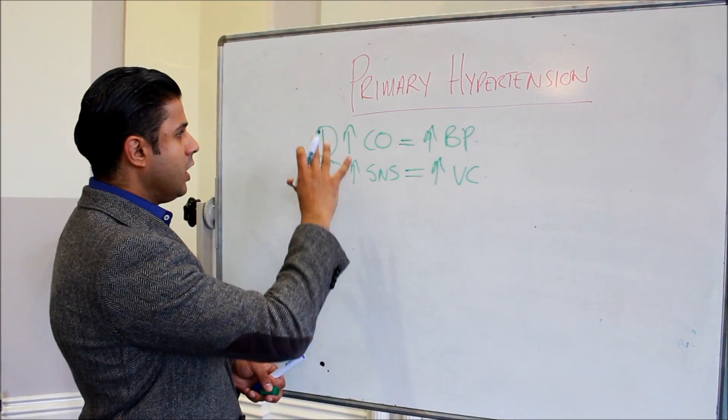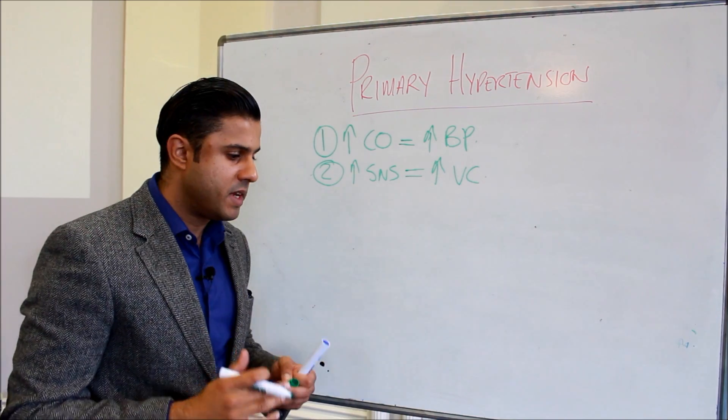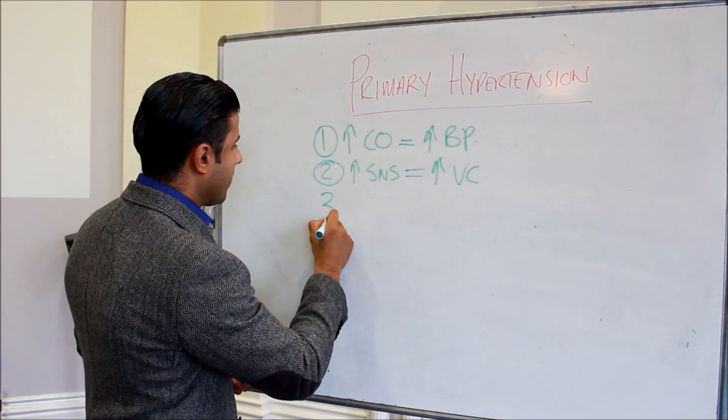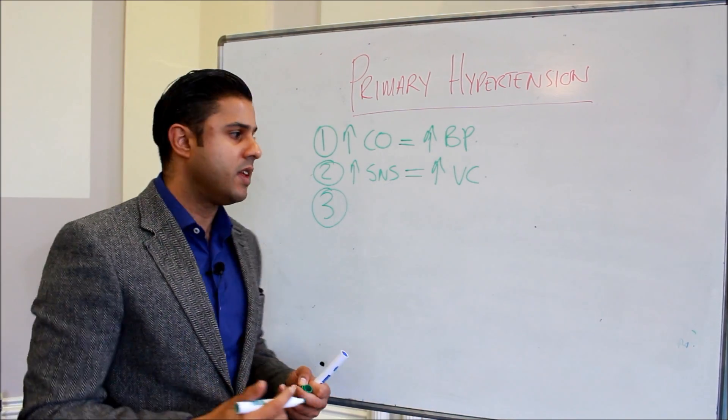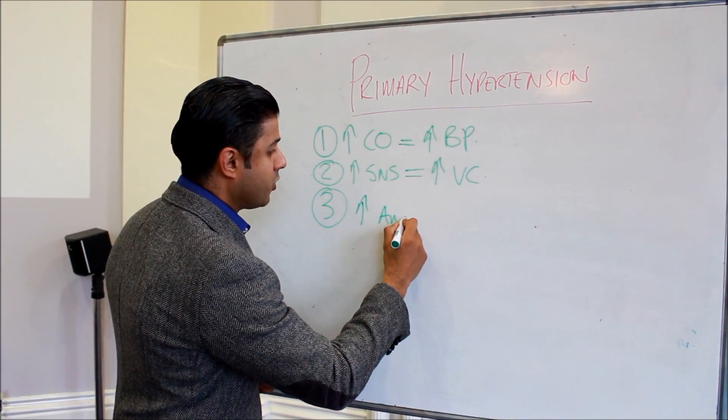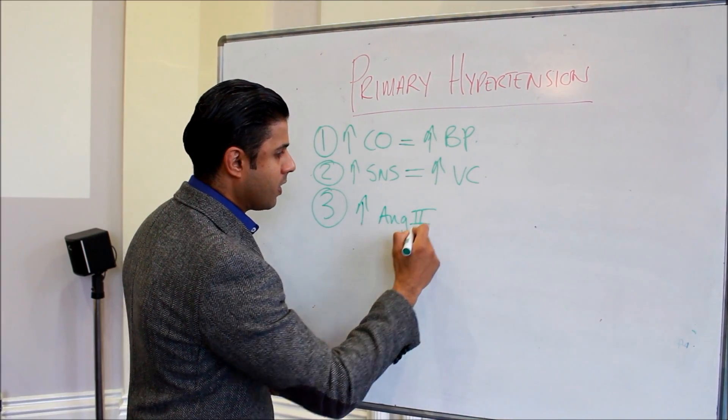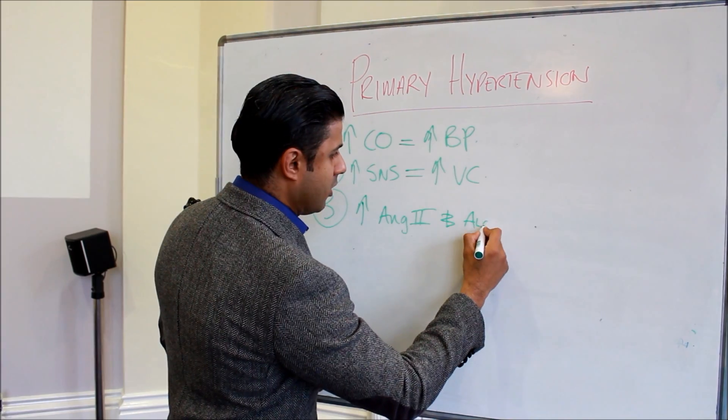These are two effects of primary hypertension in obese individuals. One of the other things that occurs is you have an increased release of angiotensin 2 and aldosterone.